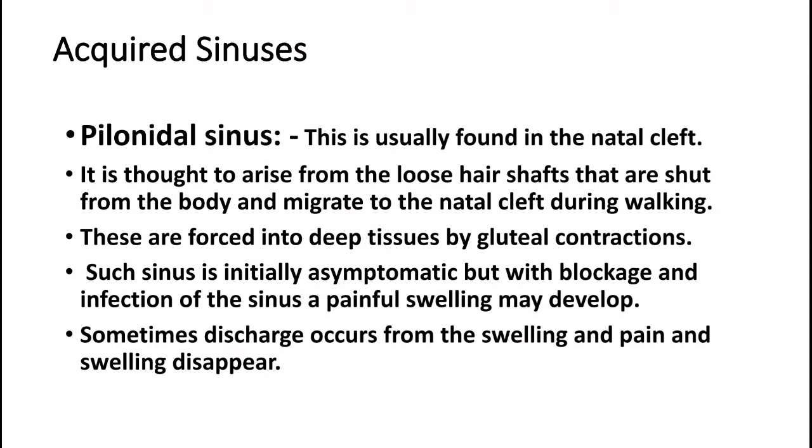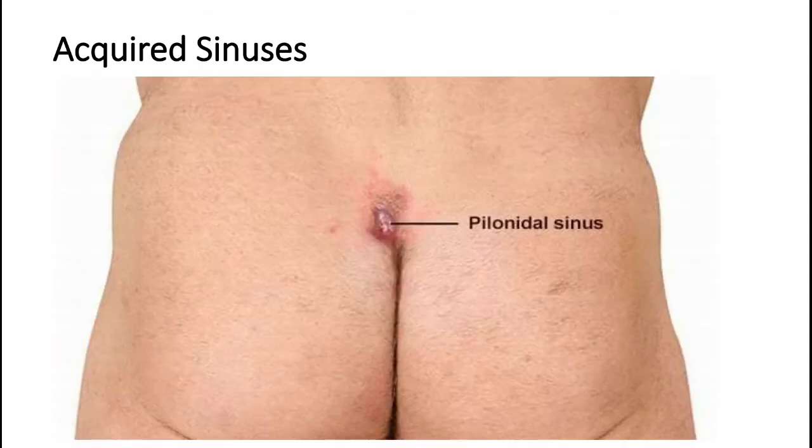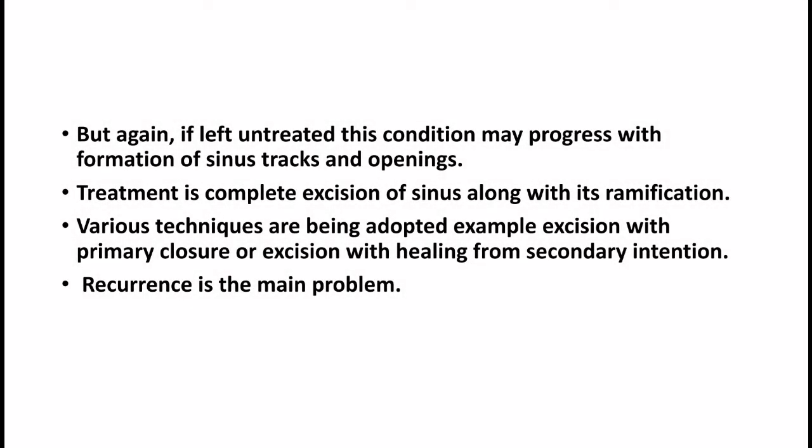Pilonidal sinus is usually found in the natal cleft. It is thought to arise from loose hair shafts that are shed from the body and migrate to the natal cleft during walking, forced into deep tissues by gluteal contractions. The sinus is initially asymptomatic, but with blockage and infection, a painful swelling may develop with discharge. If left untreated, sinus tracts and openings may form. Treatment is complete excision of the sinus along with its ramifications. Techniques include excision with primary closure or excision with healing by secondary intention. Recurrence is the main problem.